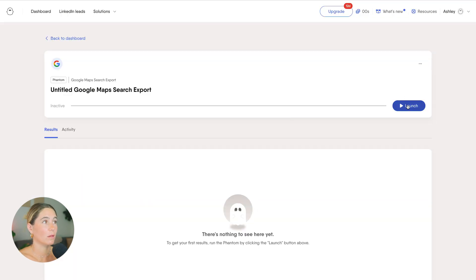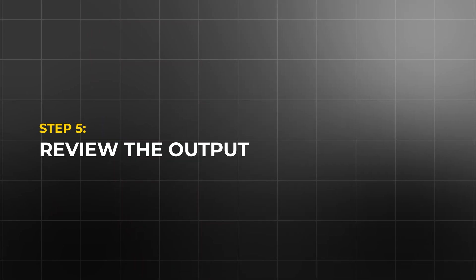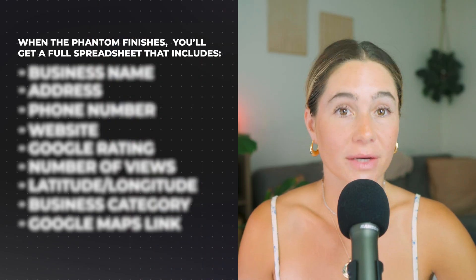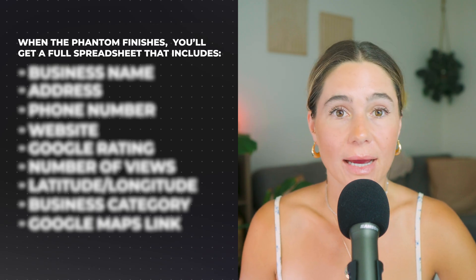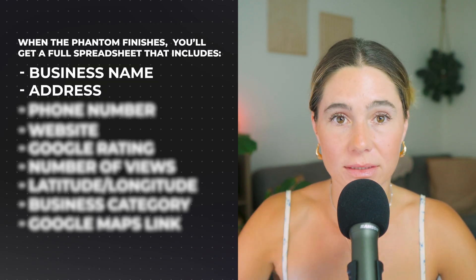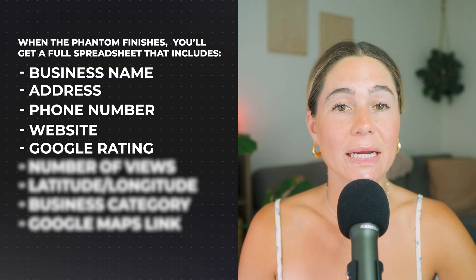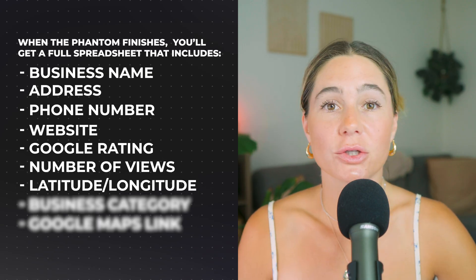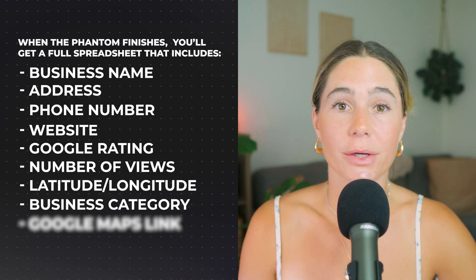All you have to do is click Launch and all your activity and results will appear. Step five is to review the output. When the phantom finishes, you'll get a full spreadsheet that includes business name, address, phone number, website, Google rating, number of reviews, latitude, longitude, business category, and Google Maps link. This is your raw lead list. If you want to go further, you can enrich this data using other phantoms or services — for example, by finding the owner's name or email address using something like Hunter.io, Dropcontact, or Clearbit.